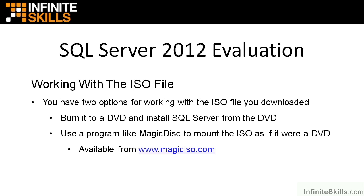You can get Magic Disk from www.magiciso.com, or since I'm taking care of you here, I put a copy of Magic Disk in your working files folder — it's a little over one megabyte — so you don't have to go to the trouble of downloading it. Just copy that little file onto your machine and kick it off and it will install Magic Disk. It's a little clunky to work with until you figure it out, but I use it all the time when downloading ISO files to evaluate something. I would strongly encourage you to go the virtual machine route if you possibly can.